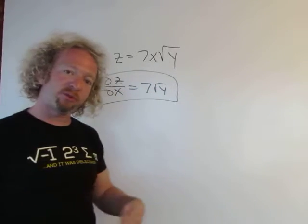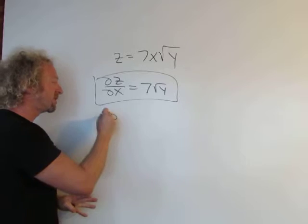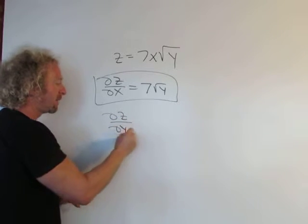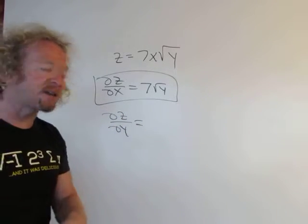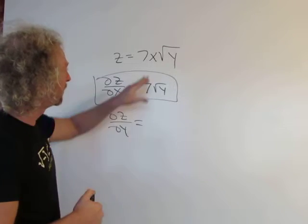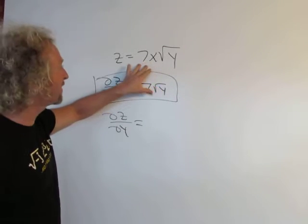Now let's take the partial derivative with respect to y. So del z del y, in this case you fix x. So you're thinking of the x as a constant and the 7 as a constant.